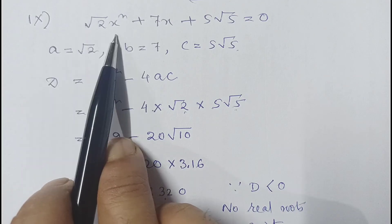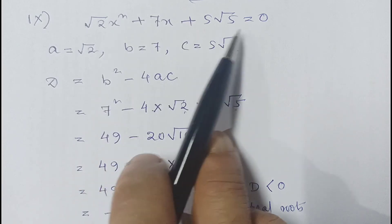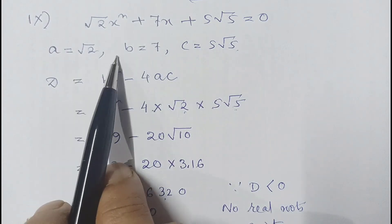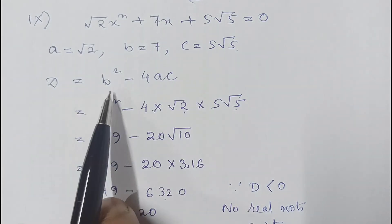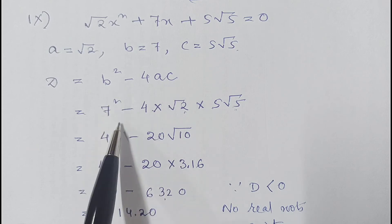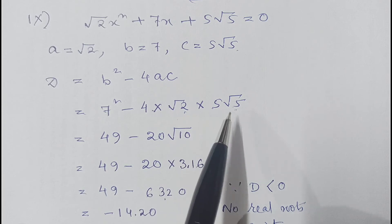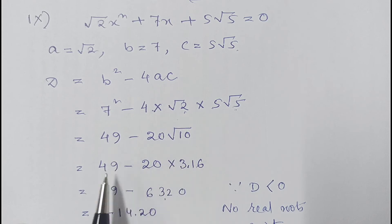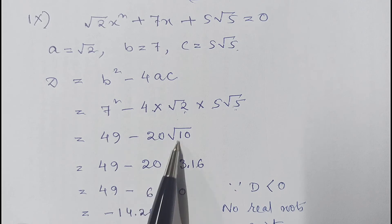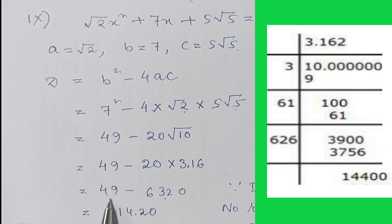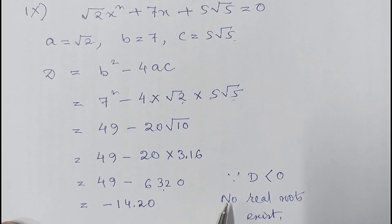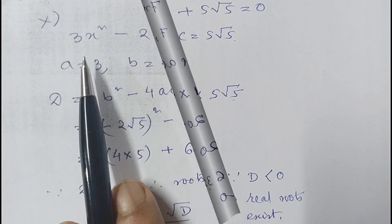Part 9 of question 2: √2 x² + 7x + 5√5 = 0. Here a = √2, b = 7, c = 5√5. Discriminant = 7² − 4(√2)(5√5) = 49 − 20√10. Since √10 ≈ 3.16, this gives 49 − 63.2 = −14.2. Since D is negative, no real roots exist.